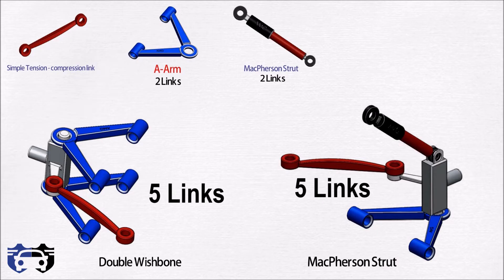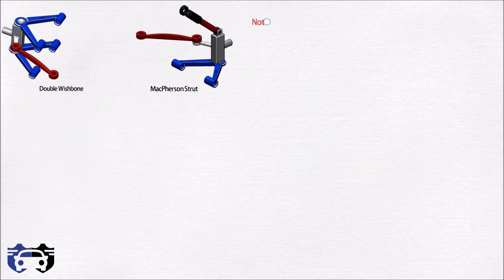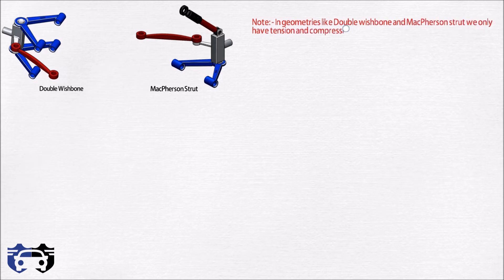Hence we want five tension and compression links for constraining five motions of wheel to achieve the single path or one degree of freedom model. Note in geometries like double wishbone and McPherson strut we only have tension and compression forces on the links, which means you can make them very light and thin according to the lateral forces.